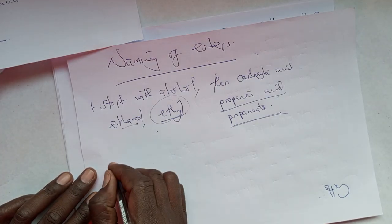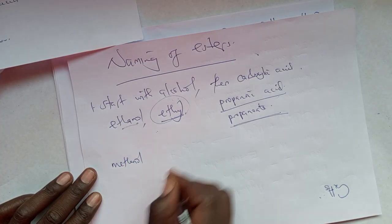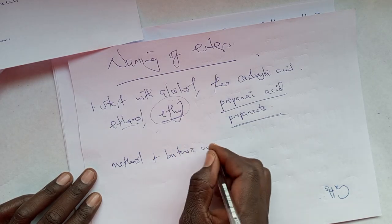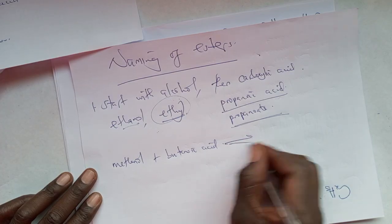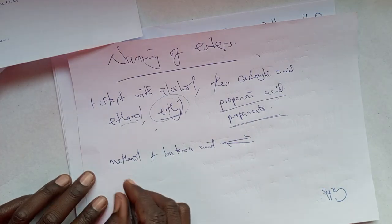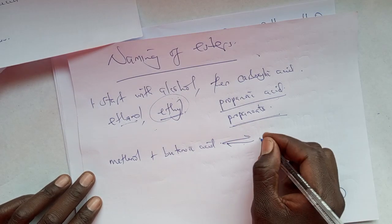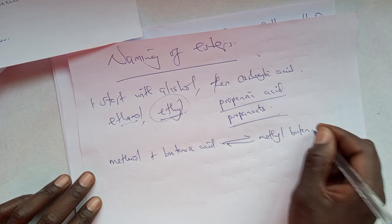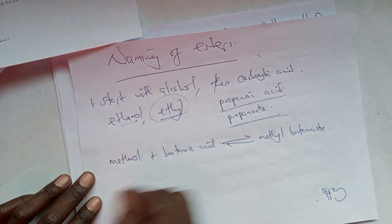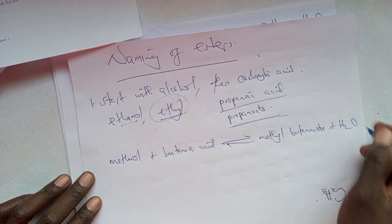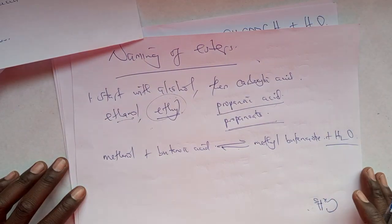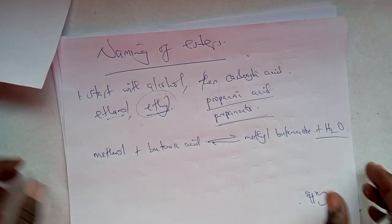If we have a reaction of methanol plus butanoic acid, the product would be methyl butanoate, plus water. The opposite of esterification is what is known as hydrolysis.